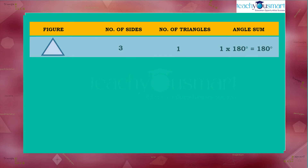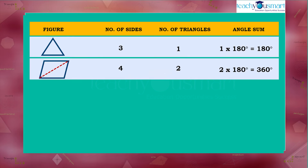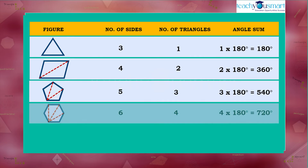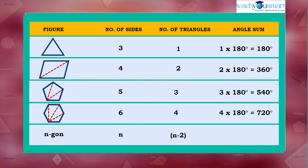So if the number of sides is n and the number of triangles that can be formed is n minus 2, the angle sum of an n-gon would be n minus 2 multiplied by 180 degrees.